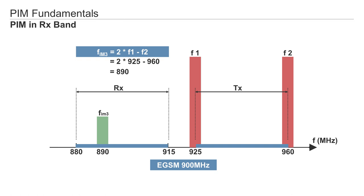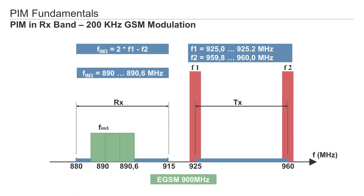In this example, PIM is based on just two TX frequencies. A carrier always uses several frequencies. It is the frequency band that enables carriers to offer different mobile services to their customers. Because of that, PIM can block main parts of the RX band where the BTS is listening to the mobile devices. The result is that the base station can no longer operate at 100%. Things get more critical if each carrier has several frequencies and services on one site location.